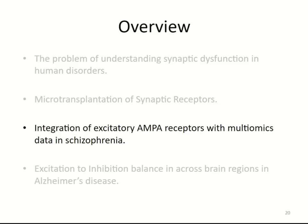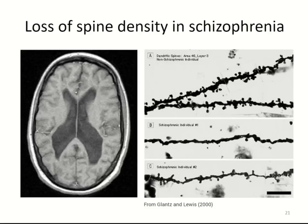Now, how do we use this information to understand large amounts of data consistently obtained from laboratories worldwide — transcriptomic, proteomic, and other omics datasets? In schizophrenia, we know there is a lot of spine density loss. This is a classic result from Glantz and Lewis showing that control cases have a healthy number of dendritic spines, while two schizophrenia cases below show a dramatic reduction. This indicates a reduction in the number of excitatory inputs to the dendrites in these neurons.